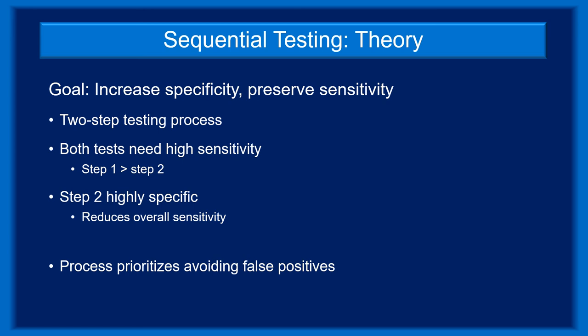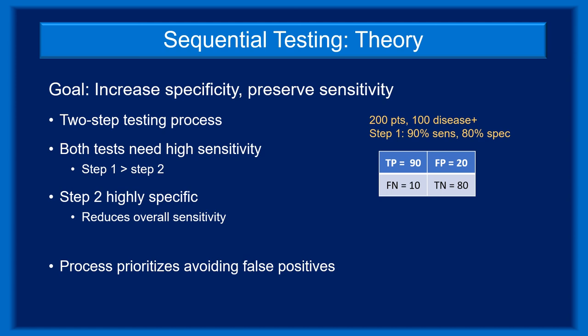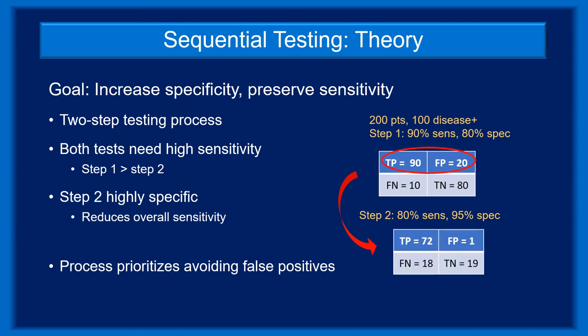Here's an example illustrating the process. Assume 200 patients, half with the disease. If the Step 1 test is 90% sensitive and 80% specific, then 90 of the 100 disease-positive patients have positive results and 10 have false negatives, with also 20 false positives from disease-negative patients. The 110 patients with positive results move to Step 2, which is 80% sensitive and 95% specific. This produces an additional 18 false negatives and 1 false positive, making the overall sensitivity of sequential testing 72% and its specificity 99%.